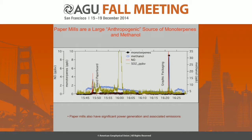Last but not least — flying around in the southeast U.S., you happen to see a lot of really large spikes of monoterpenes, methanol, and other compounds we usually think of as biogenic. In this case they actually happen to be paper mills processing all the trees in the southeast.